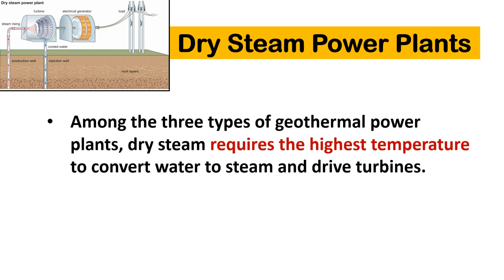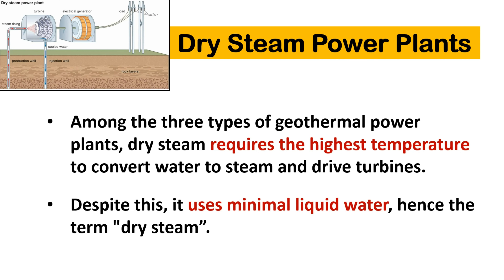Among the three types of geothermal power plants, dry steam requires the highest temperature to convert water to steam and drive turbines. Despite this, it uses minimal liquid water, hence the term dry steam.